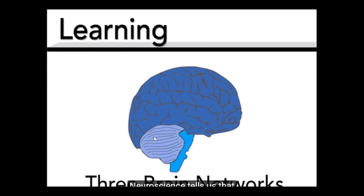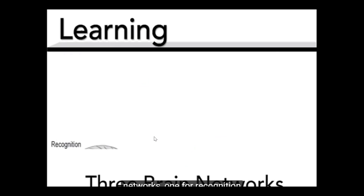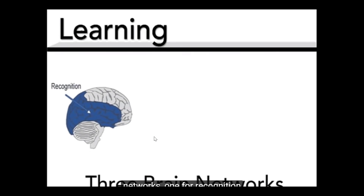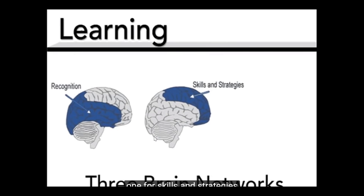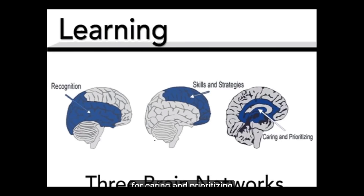Learning is not one thing. Neuroscience tells us that our brains have three broad networks: one for recognition — the what of learning; one for skills and strategies — the how of learning; and one for caring and prioritizing — the why of learning. Students need to gain knowledge, skills, and enthusiasm for learning, and a curriculum needs to help them do all three.